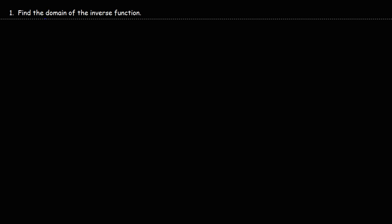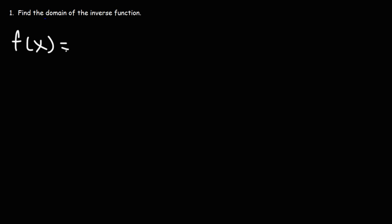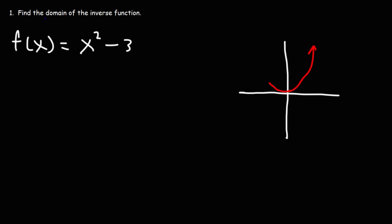Now let's consider another problem. Let's say we have the function x squared minus 3. Find the domain of the inverse function. Let's draw a rough sketch of the graph of that function. x squared is a parabola that opens upward, but it's been shifted 3 units down. It has a y-intercept of negative 3. This particular function does not have an inverse function because it does not pass the horizontal line test — it touches it at two points.